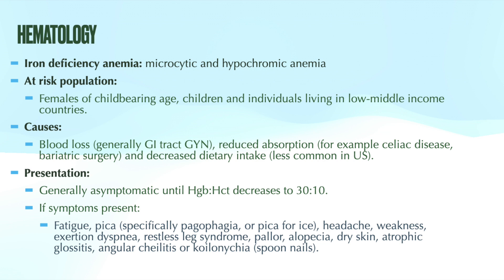Iron studies can be ordered as a panel for a more complete picture. Components include serum iron, transferrin (also reported as the total iron binding capacity, TIBC), a calculated transferrin saturation, and a ferritin level. A serum ferritin less than 30 is confirmatory for the diagnosis of iron deficiency anemia.